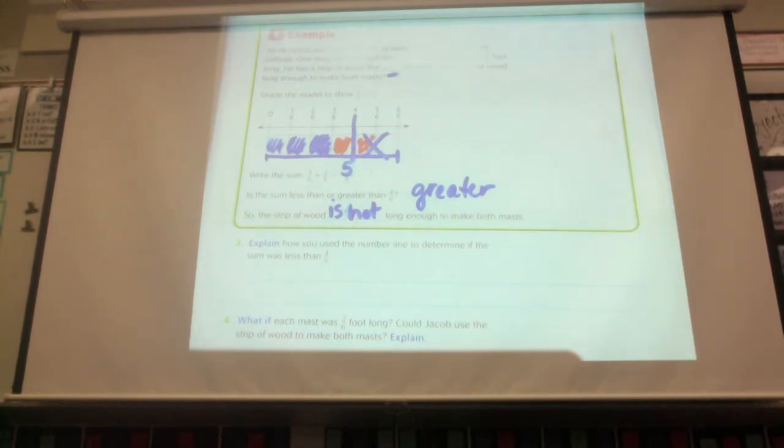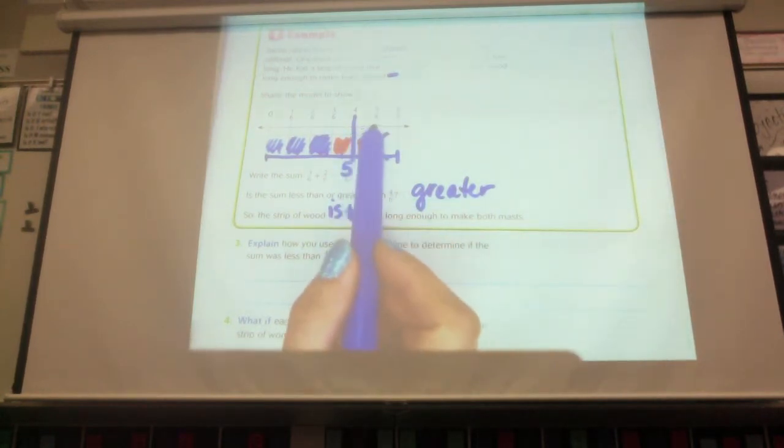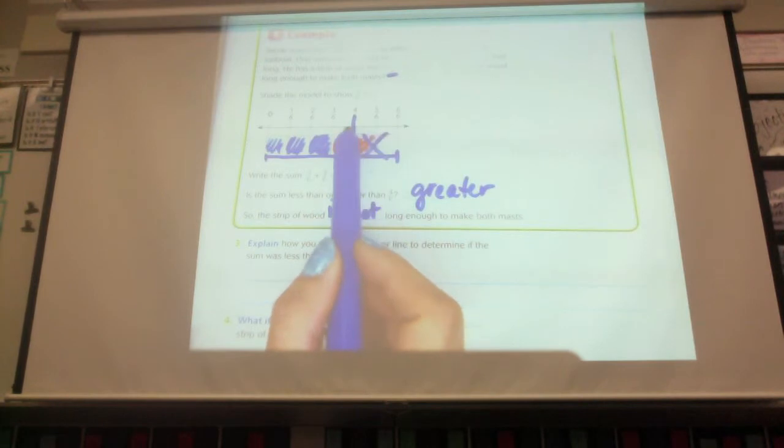Explain how you use the number line to determine if the sum was less than four-sixths. Okay, so you can look at the number line and you can see that five-sixths is over here. Four-sixths is over here, but he needs this much. But he only has this much.